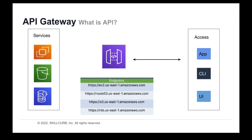Take a look at this diagram of APIs. On the left, we have the services — the service can be an EC2 instance, an RDS database, an S3 bucket, and so on. On the right, we have the ways to access AWS: an application that uses AWS services, AWS CLI, or user interface. When we access AWS, we are using endpoints to connect to AWS. Each AWS service has its own endpoints in each AWS region, and these endpoints are our entry points to our AWS APIs.